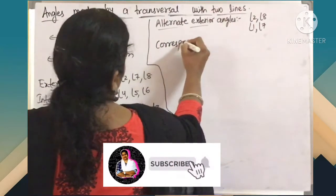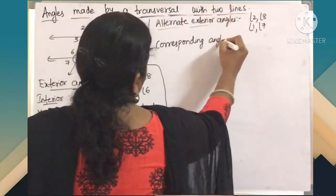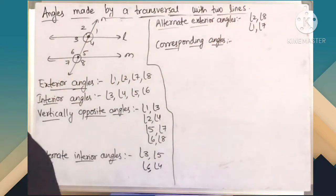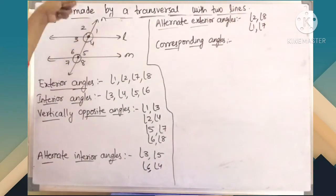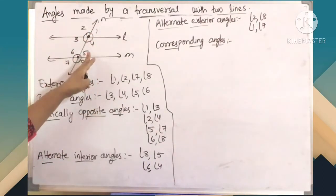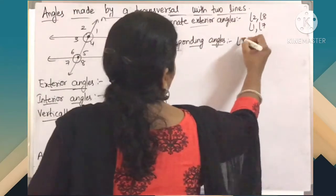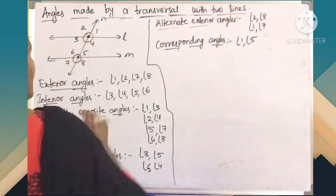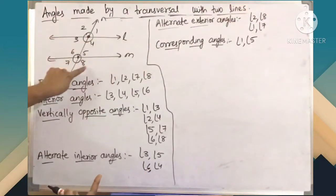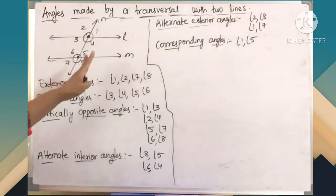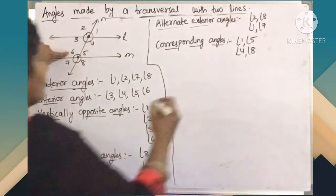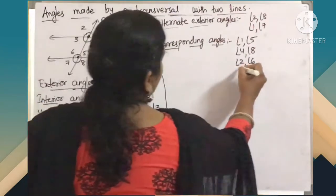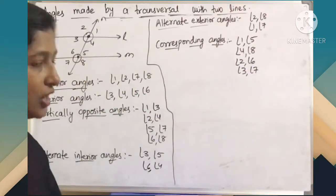Next one, corresponding angles. Both should be on the same side of the transversal, one should be interior, one should be exterior, and they should not be adjacent. If I take angle 1 and angle 5: 1 is exterior, 5 is interior, they are not adjacent and they are on the same side of the transversal — so angle 1 and angle 5 is one pair. Next, angle 4 and angle 8: 4 is interior, 8 is exterior, on the same side and not adjacent. Coming to the other side, angle 2 and angle 6, and angle 3 and angle 7. So totally we get 4 pairs of corresponding angles.